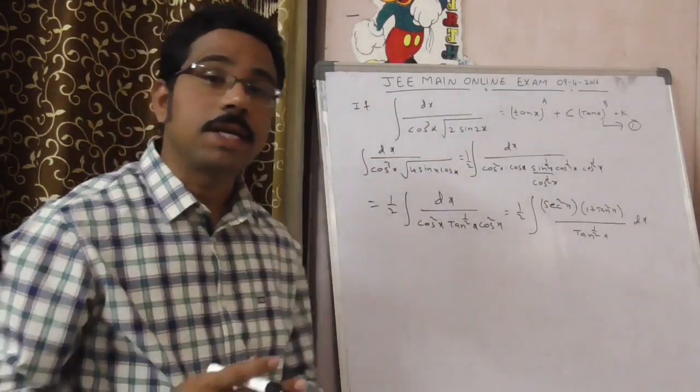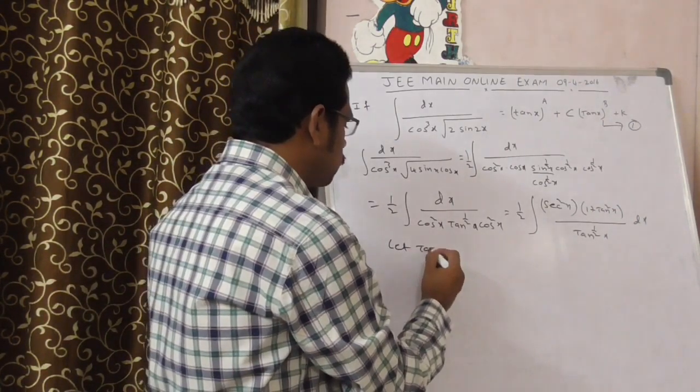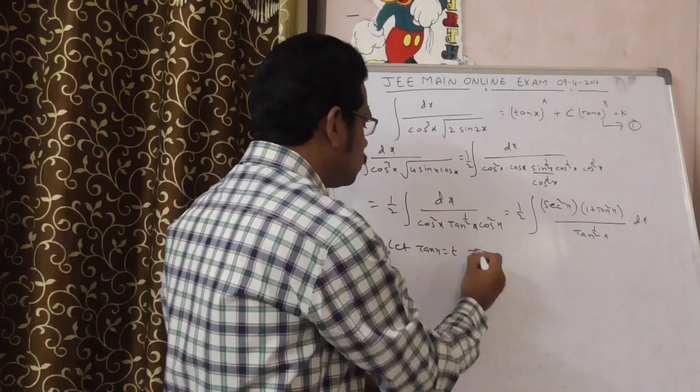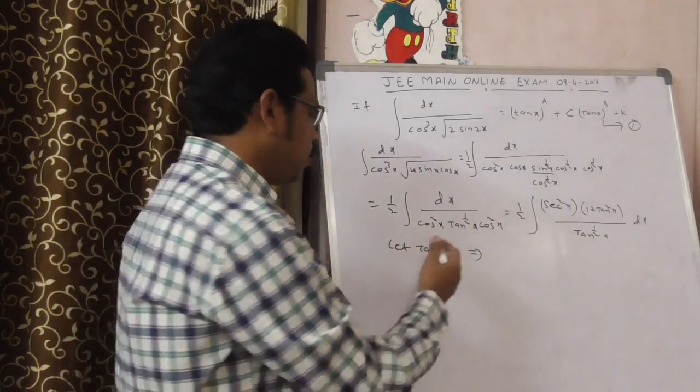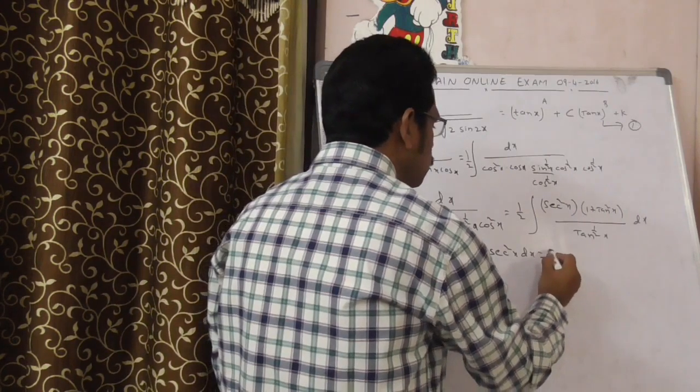Now, you can guess what is your next step. Very good. Are you very genius? Now, let tan x is equal to t. If tan x is equal to t, so differentiate it. This is secant square x dx is equal to dt.